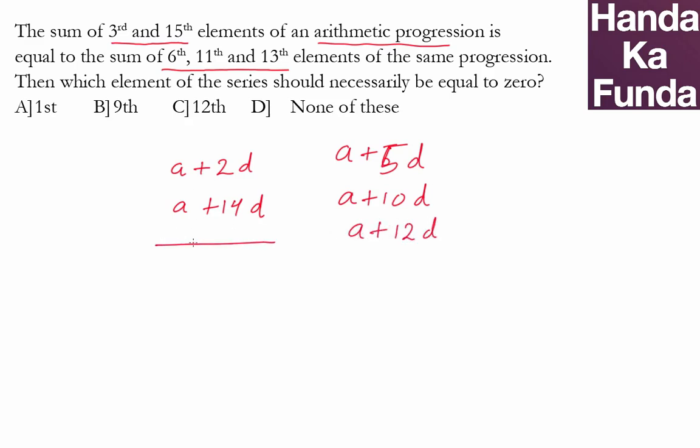So what is the overall sum on the left hand side? That is 2A plus 16D. What is it on the right hand side? That is 3A plus 27D. And we are given that these two are equal to each other, which essentially means if I take the 2A and 16D to the other side, I get A plus 11D as 0.